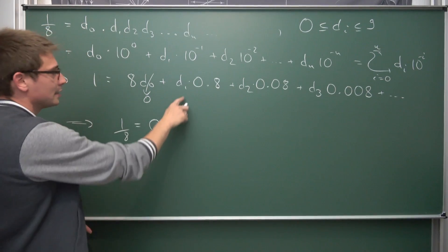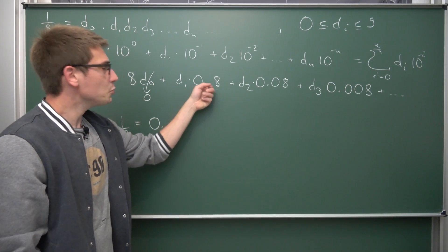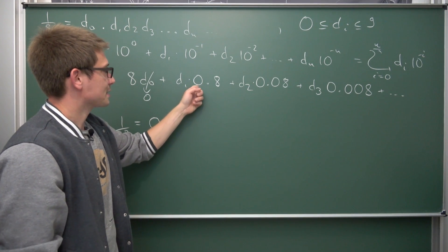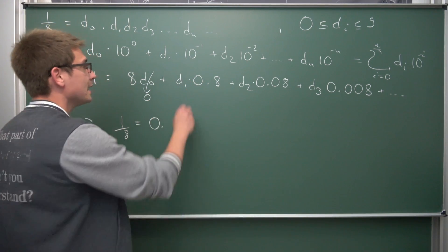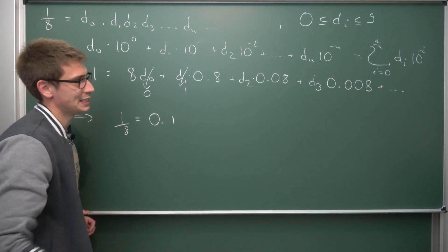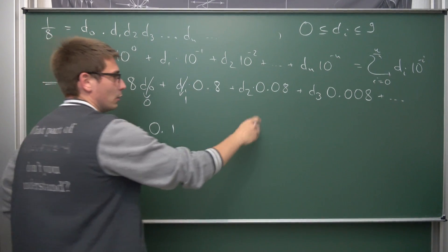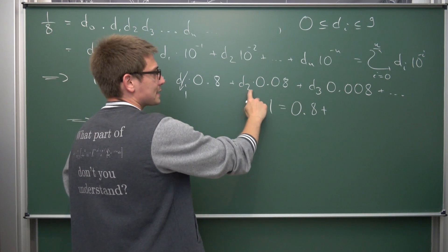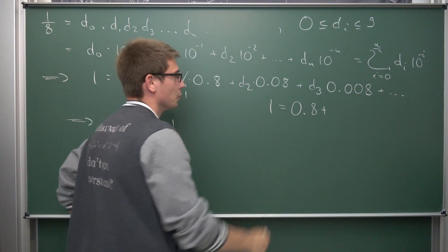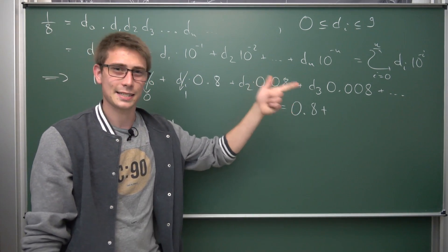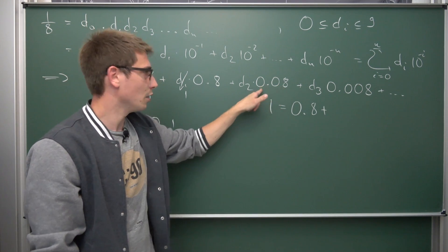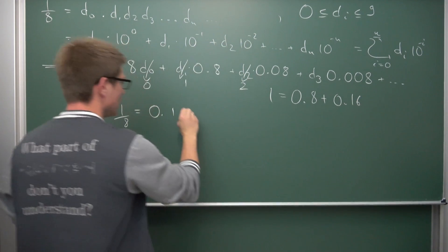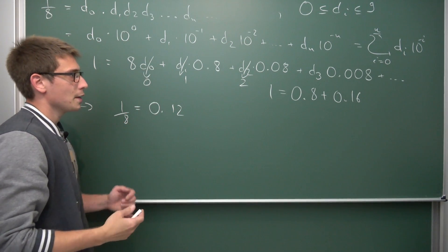Next, how often does 0.8 fit into our number one for d1? You may notice the similarity to long division. One time obviously — hence d1 equals one, so one-eighth at this point is 0.1 something. We have used 0.8, so 0.2 is still left. How often does 0.08 fit into 0.2? Eight goes 16, so it fits two times — giving us 0.16. So d2 equals two, meaning one-eighth is equal to 0.12 so far.